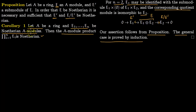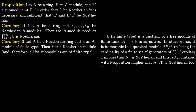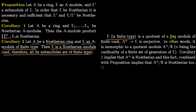Corollary two: let A be a Noetherian ring and E an A-module of finite type; then E is a Noetherian module, and therefore all its submodules are of finite type. Since E is of finite type, it is the quotient of a free module of finite rank, meaning E is of the form A^n modulo some submodule R, where n is the cardinality of the finite set of generators of E. This corollary implies A^n is Noetherian precisely because A is a Noetherian ring.